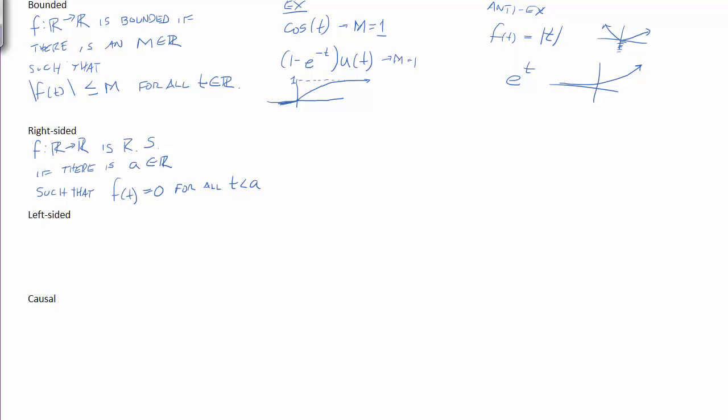So an example of a right-sided signal is a good old unit step. Unit step is 0 to the left of 0. So in this case, a would be 0. Another example is the rectangular pulse function. This is active below t equals negative one-half. So these are both right-sided signals. One of which is finite duration, this one. The other one is infinite duration.